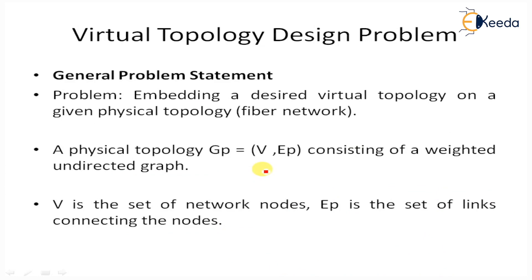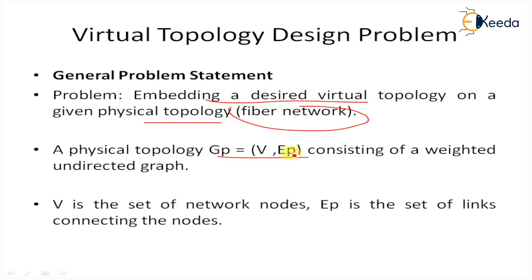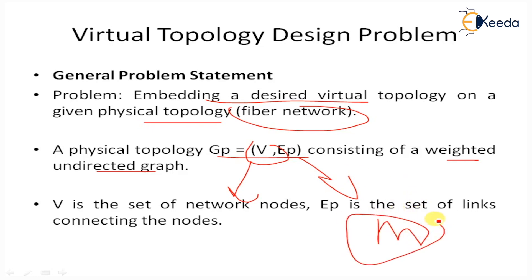The general problem statement is defined as embedding a desired virtual topology onto a given physical topology in a hyper-optic network. The physical topology Gp = (V, Ep) consists of a weighted undirected graph, where V is the set of network nodes and Ep is the set of links connecting the nodes. Undirected means each link in the physical topology is bidirectional. The number of wavelengths carried by each fiber is denoted as M.